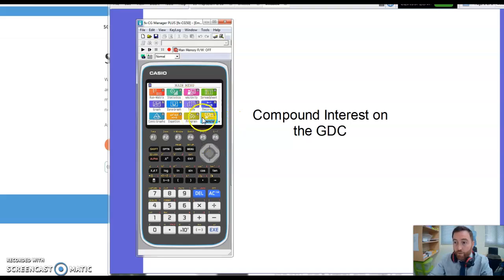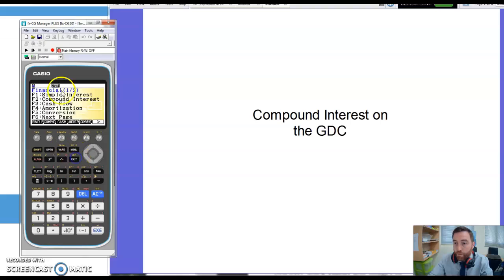Now compound interest is in this financial app here, so scroll down to the financial app and open that one up and you'll be given this menu here. And the one we're going to look at today is this F2 compound interest. So if I want to do that I can click on F2 here for compound interest.